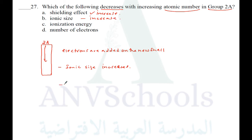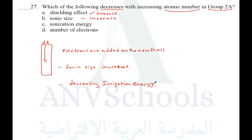Ionization energy — the energy you need to ionize the atom — decreases as you go down the group. Ionization energy is high for an atom whose nuclear charge strongly affects the outermost electron, so one cannot easily lose an electron. As the number of electrons increases with atomic number, ionization energy decreases. So the answer will be C.